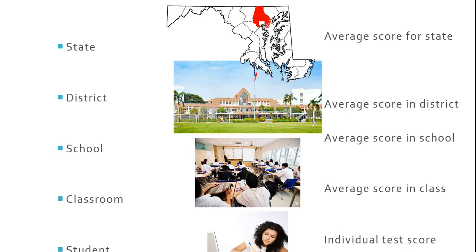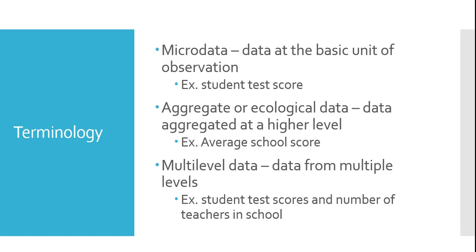We're just introducing the idea that there are different levels to the data. Let's add some terminology to this. When we talk about data at the most basic level — in this case, the level of the student — we refer to this as microdata. Microdata is a term that means data at the most basic unit of observation. In a medical example, microdata might be at the level of the patient; in the case of schools, you might think of data at the level of the student.